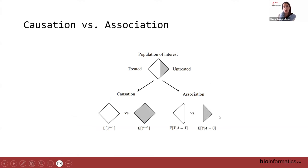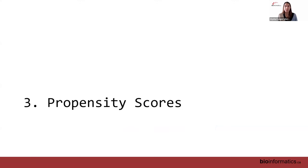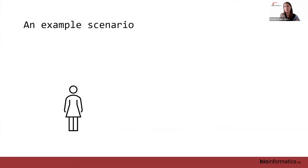Causation versus association: with association, we split our population into treated versus untreated and compare them — but that only gives us correlation. Ideally, we would take the treated group and ask what would have happened had they been untreated, and vice versa. Comparing those completed 'diamonds' gives us causation. The problem is obviously that we cannot observe everyone's potential outcome under a treatment they didn't receive.